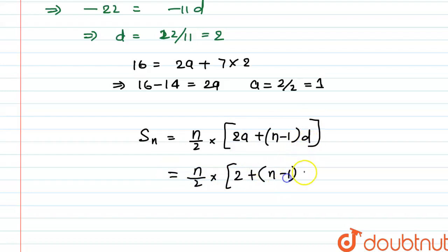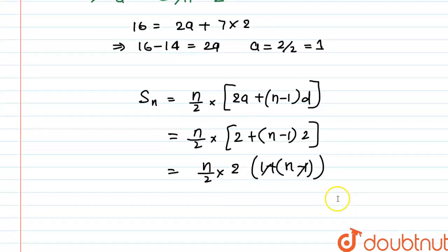So n minus 1 into 2. Now taking 2 as a common, that is n by 2 into 2, and 1 plus n minus 1. And here 1, 1 will cancel out, and also 2, 2 will cancel out. This is equal to n square. So the sum of n terms of this given AP is n square.